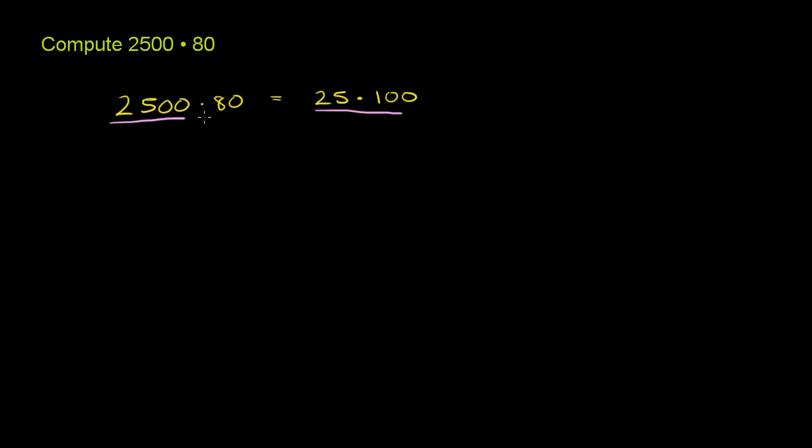2,500 is 25 times 100 times 80. And what's 80? 80 is 8 times 10.